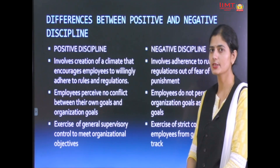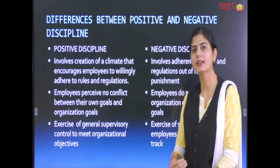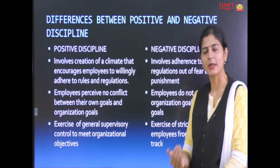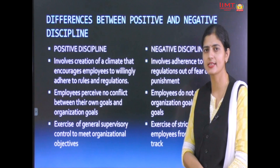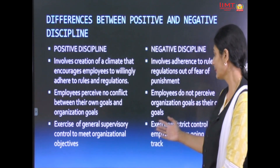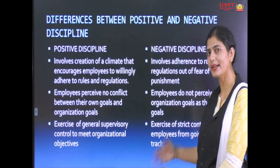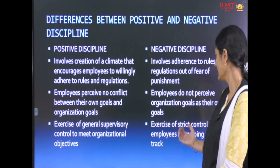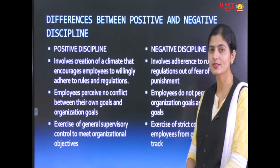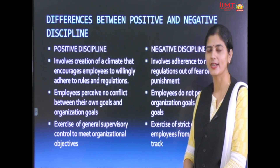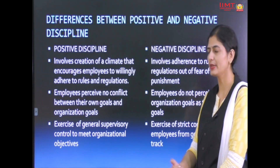On the basis of supervision: in positive discipline, only normal supervision is required since employees are self-disciplined. But in negative discipline, an extreme level of supervision is required — strict supervision is done by the supervisor so that employees follow the code of behavior.